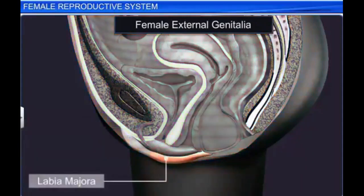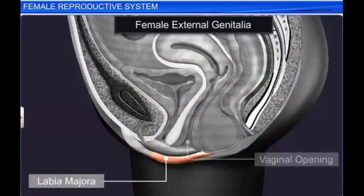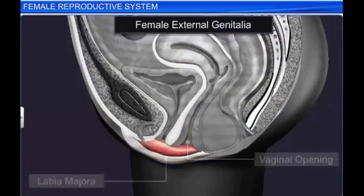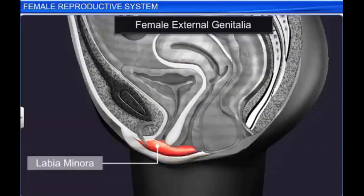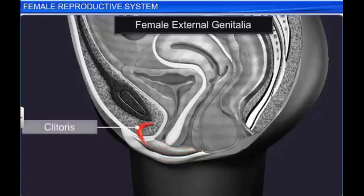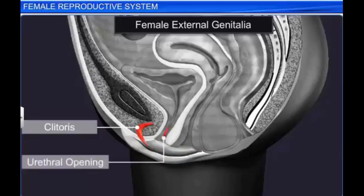The labia majora consists of fleshy folds of tissue that extends down from the mons pubis and surrounds the vaginal opening. Hidden under the labia majora is the labia minora. Towards its upper end lies the clitoris, a small finger-like structure. And below it is the urethral opening.